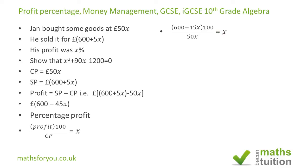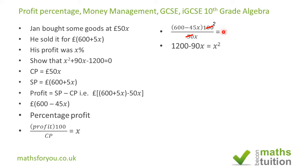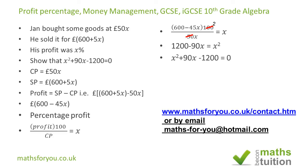Dividing numerator and denominator by 50, the 50 cancels and 100 divided by 50 gives 2. Opening out the brackets gives 1200 minus 90X. Cross-multiplying gives X squared. Moving minus 90X across changes the sign to plus 90X, and moving 1200 across changes the sign to minus 1200. So we end up with X squared plus 90X minus 1200 equals zero.